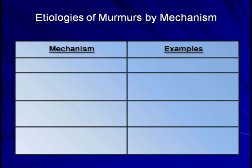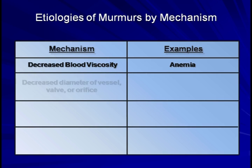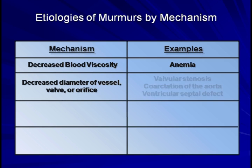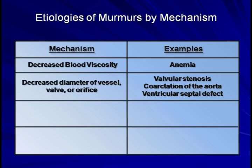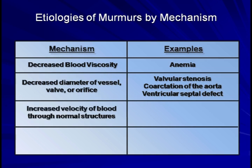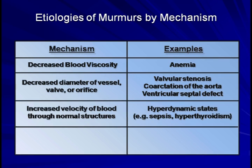Let's take a quick look at the etiologies of murmurs by physiologic mechanism. First, decreased blood viscosity — the only example of this is anemia. Next, decreased diameter of a vessel, valve, or other orifice, including valvular stenosis, coarctation of the aorta, and a ventricular septal defect. Then, there is increased velocity of blood through normal structures, as seen in hyperdynamic states such as sepsis and hyperthyroidism.